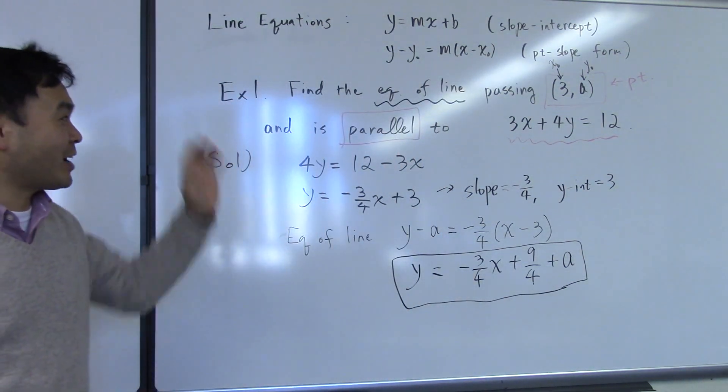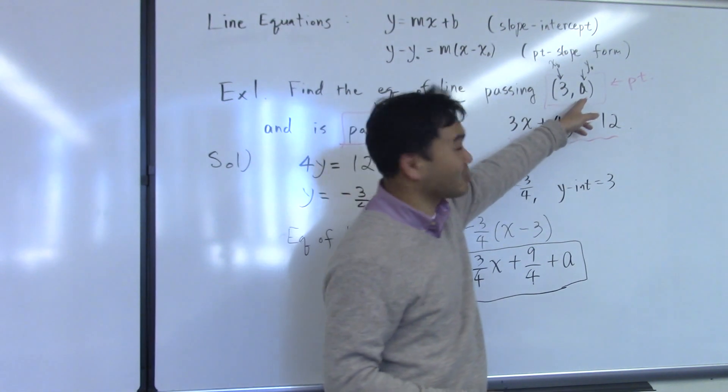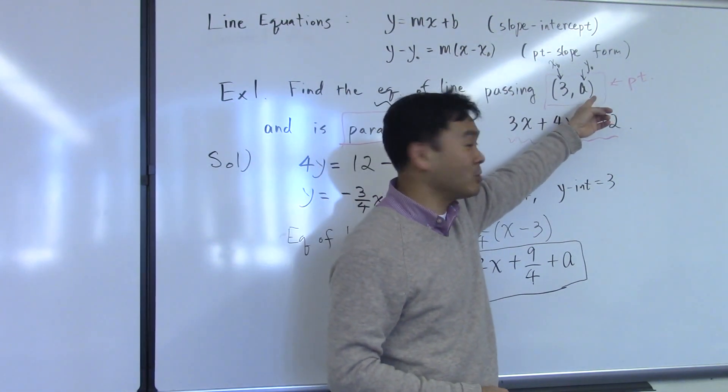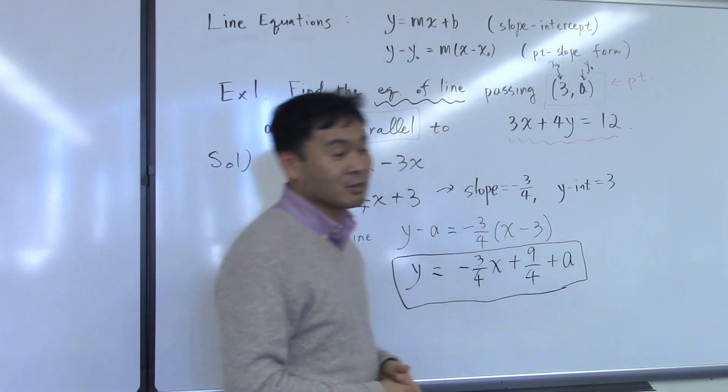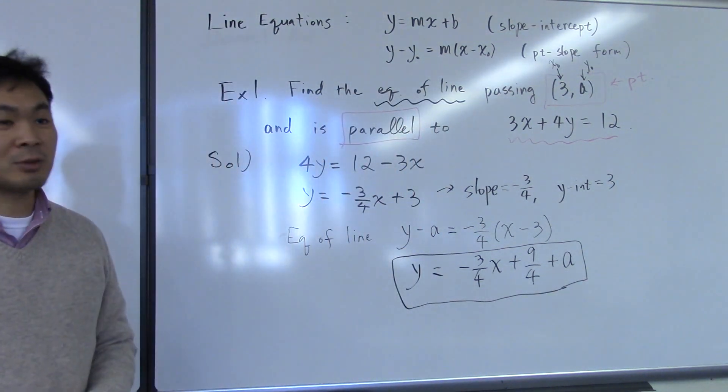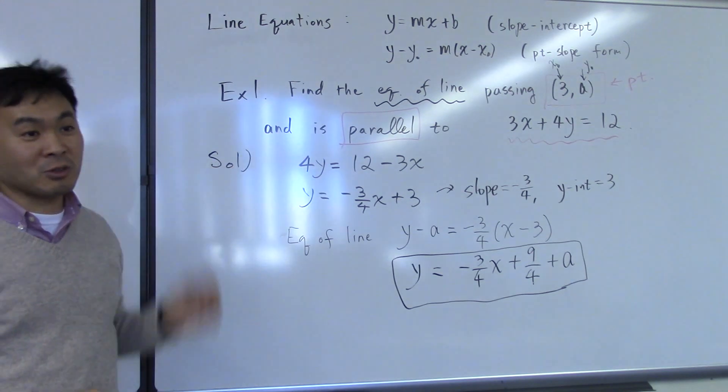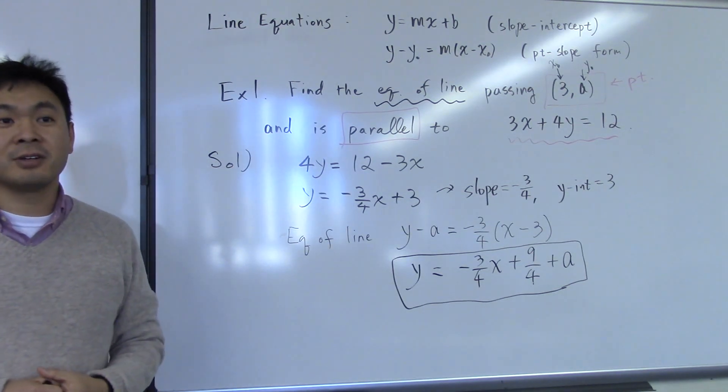I mean, it could be that this is just a number. It could be given in the question where you have like 3 comma 7 or something, then this would be 7. But it's just that in this problem, it's a. Any other questions?